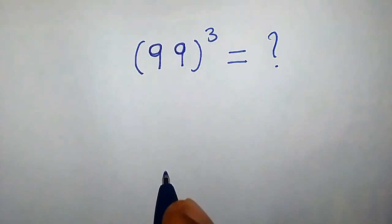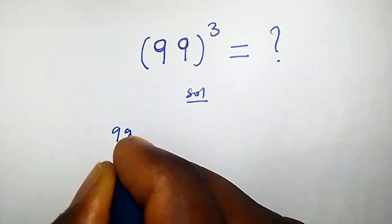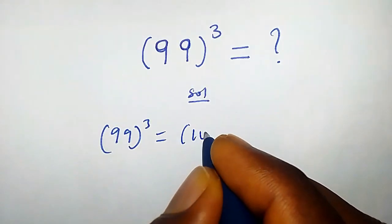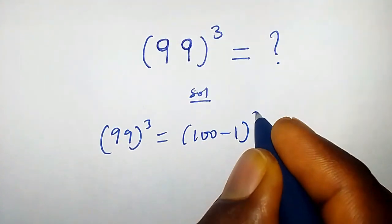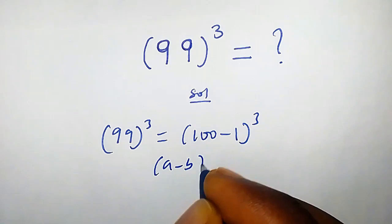How do we evaluate this without using a calculator? The solution: we have 99 raised to the power of 3. This can be written as (100 - 1) raised to the power of 3. Recall that whenever we have (a - b) raised